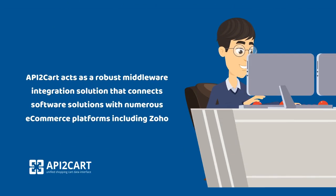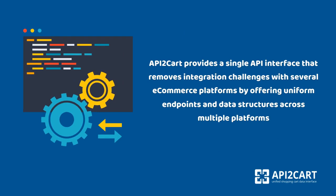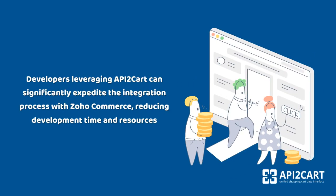API2Cart acts as a robust middleware integration solution that connects software solutions with numerous e-commerce platforms including Zoho. API2Cart provides a single API interface that removes integration challenges with several e-commerce platforms by offering uniform endpoints and data structures across multiple platforms. Developers leveraging API2Cart can significantly expedite the integration process with Zoho Commerce, reducing development time and resources.